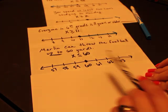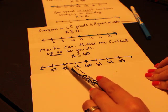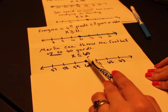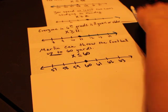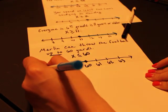So he could throw the football up to 60 yards, meaning this is the most he can throw it. Could he throw it 59 yards? Sure. Could he throw it 58? Yeah. 57? Yes. So all the way down to the left. Less than or equal to, the left.